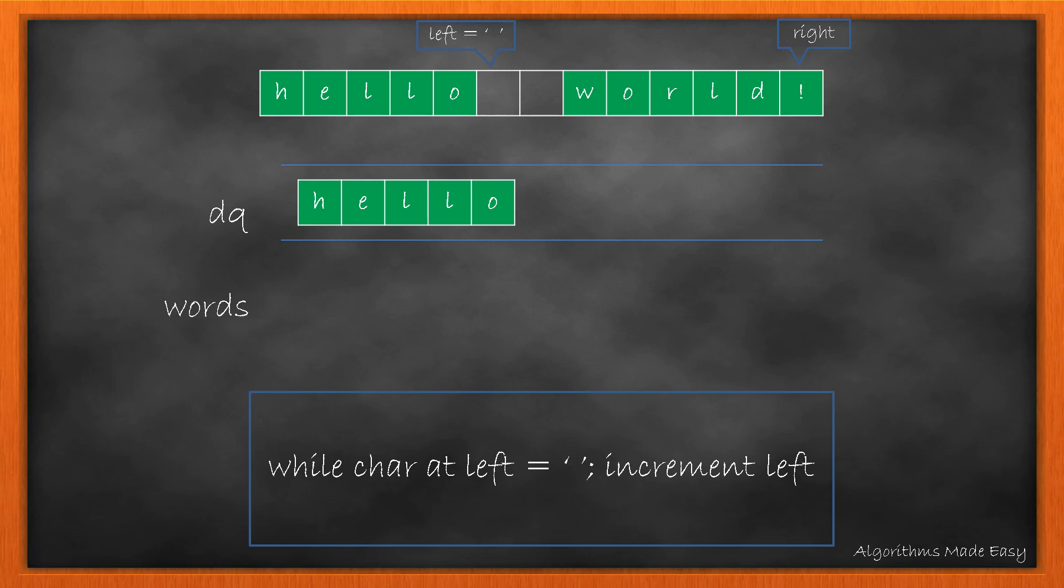We will increment the left pointer till we get the next character that is not a space. As it is still a space, we increment our left pointer one step further. Now the character is not a space character. So we again append the character in word till we get another space character or the end of string.